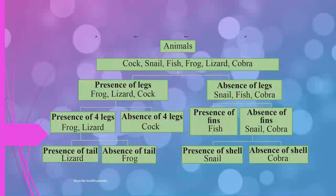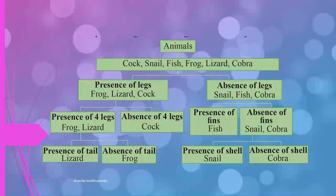Frog, lizard, and cork have presence of legs. Bat, snail, fish, and cobra have absence of legs. Legs is an external feature — presence of legs and absence of legs.